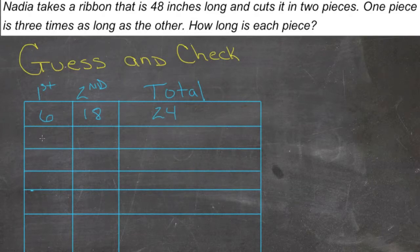That's not big enough. Let's try nine. If this one's nine, then this one is three times nine, or 27. That makes this one 36. Still not long enough. How about 12?